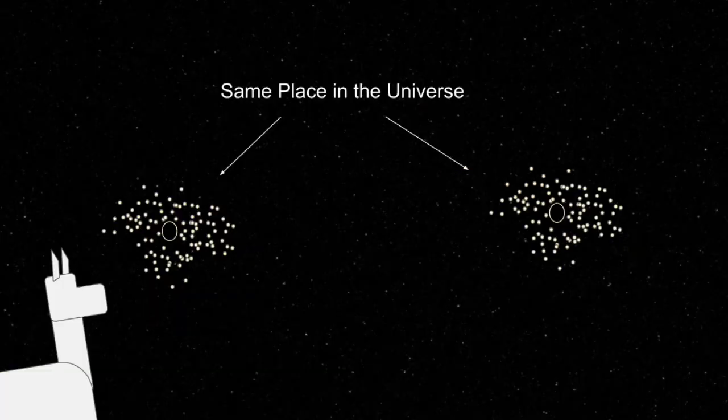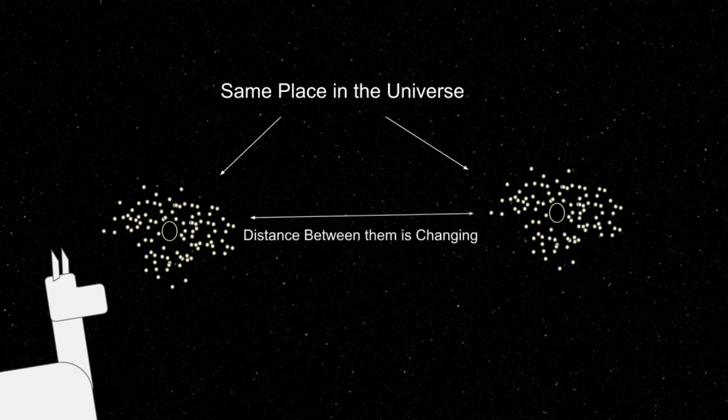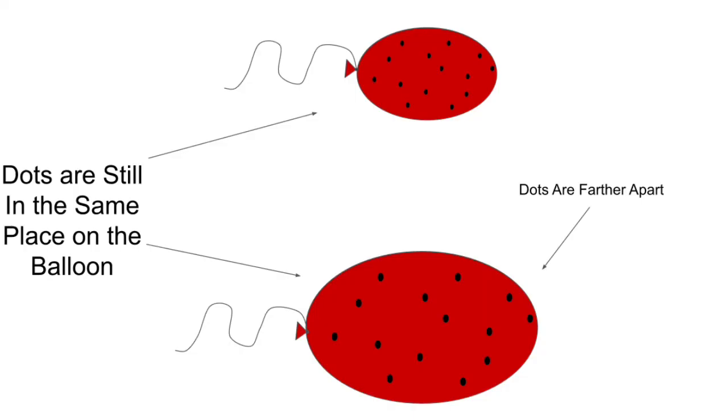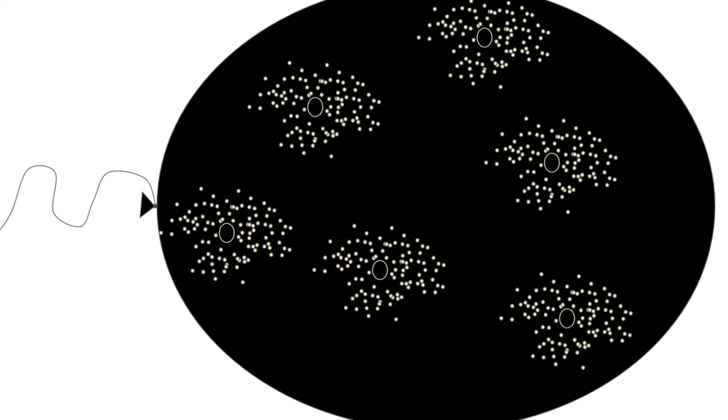But the galaxies aren't moving. Just the distance between them is increasing. If we look at this through the balloon analogy, as we blow up the balloon, the dots are on the same place on the balloon, just the distance between them is changing. The galaxies don't care what they are going faster than the speed of light relative to us, they only have a limit as to how fast they can move on the surface of the balloon, which in our universe is the speed of light.